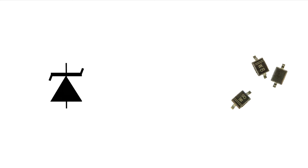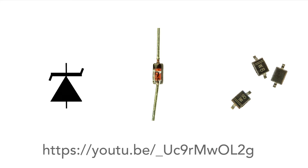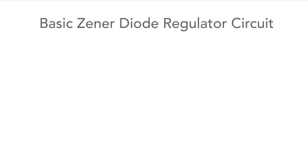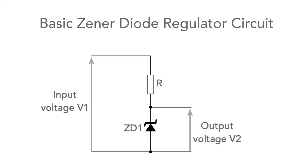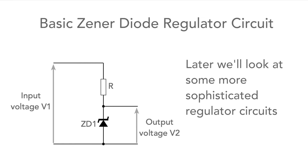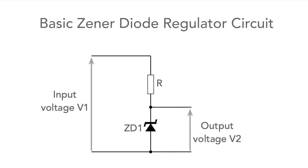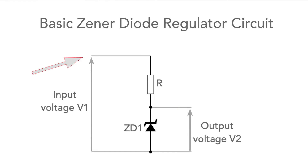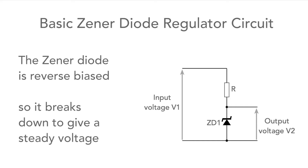More information about the Zener diode itself can be found on a companion video about the Zener diode on our channel — a link can be found in the description. Now let's look at the most basic Zener diode regulator. The basic circuit is a shunt regulator using a single resistor and diode in series. The power is applied to the top end of the resistor and current flows through it and into the Zener diode, which is reverse biased so it breaks down to give the steady voltage.